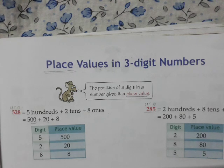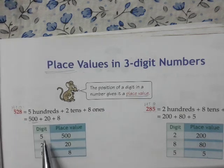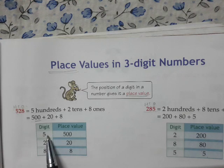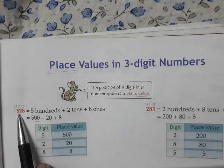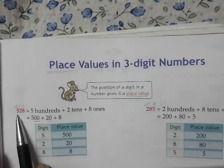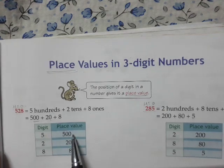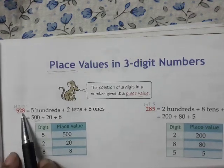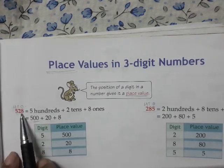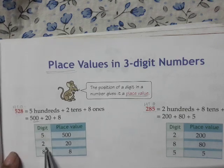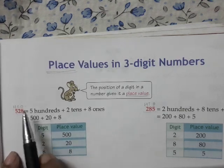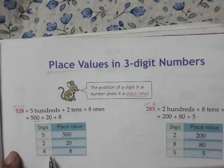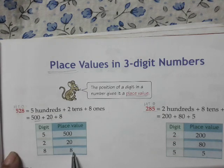That value is called the place value. In 528, what is the place value of 5? The 5 is sitting in the place of 100's, so the value of 5 is 500. 2 is in the place of 10's, so its value is 20. 8 is in the place of 1's, so its value is 8.